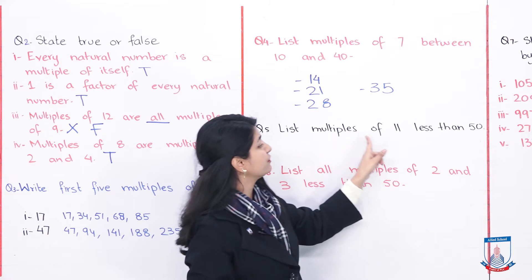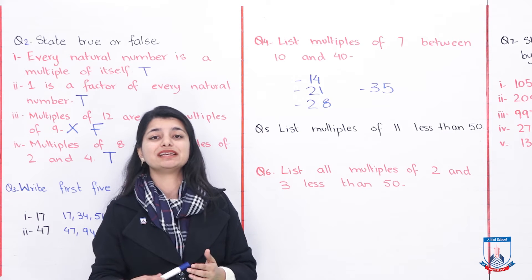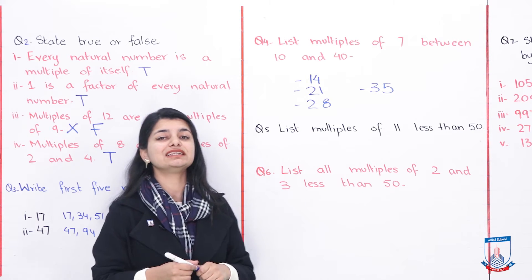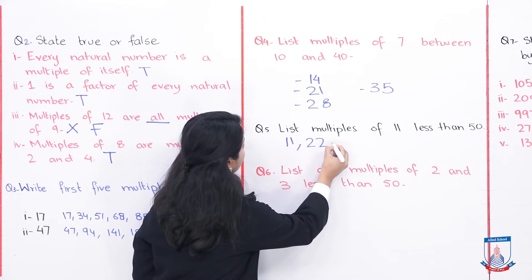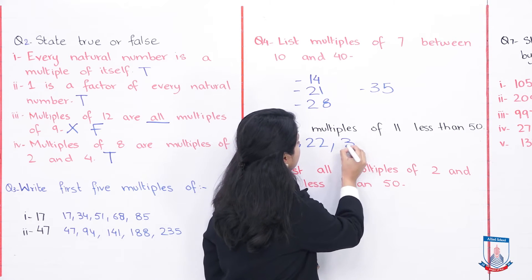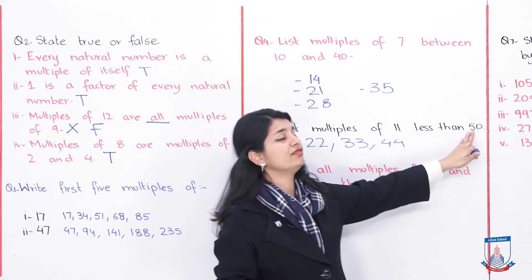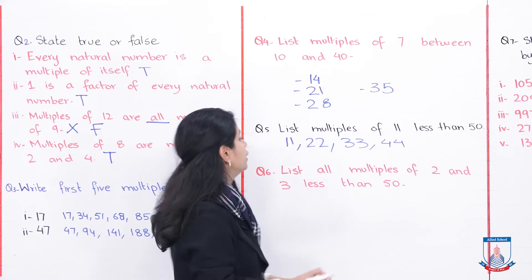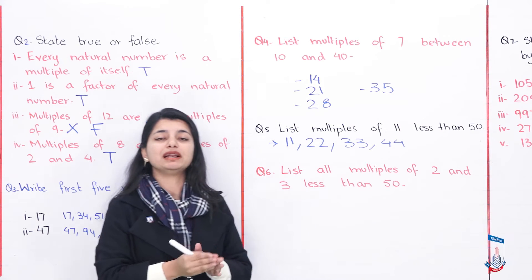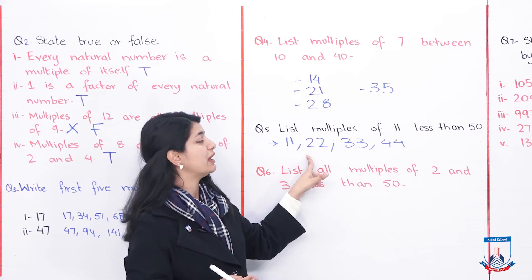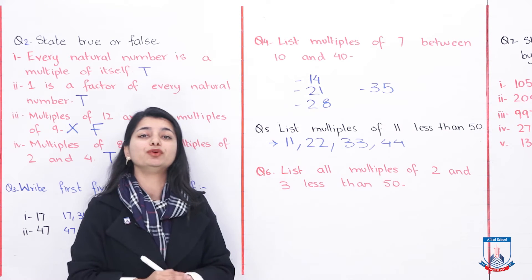List multiples of 11 less than 50. Recall the table of 11: 11 ones are 11, 11 twos are 22, 11 threes are 33, 11 fours are 44, 11 fives are 55 — we will not write that because it is above 50. So only these four multiples — 11, 22, 33, 44 — fall into this question.